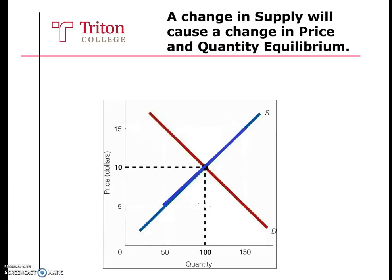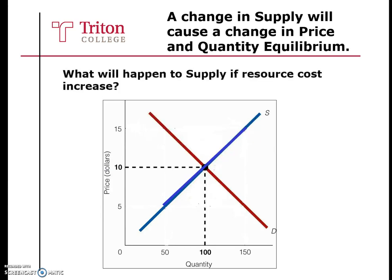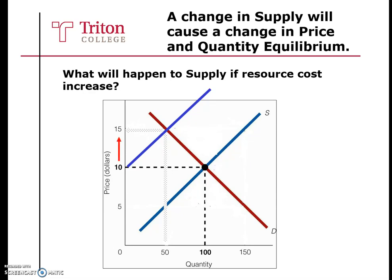Let's take a look at what happens when there's a change in supply. What will happen to supply if resource cost increases? When resource cost increases, firms will supply less — we see a decrease in supply, and the supply curve will shift left. Due to the increase in resource cost, prices will increase from 10 to 15 in this case, and quantity equilibrium will also decrease from 100 to 50.